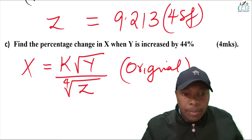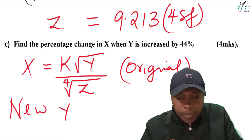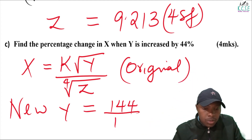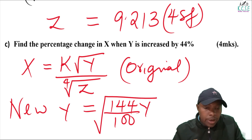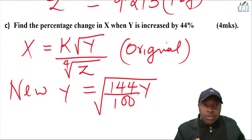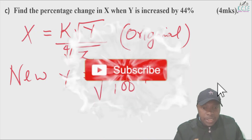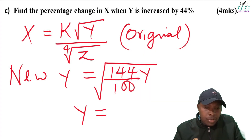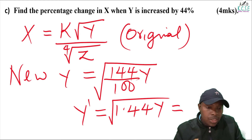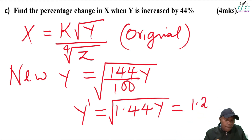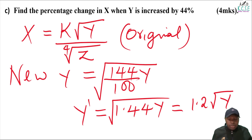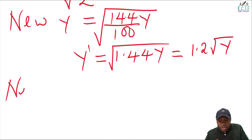When y is increased by 44%, new y will be 144 over 100 times y, which equals 1.44y. In the equation we need the square root of the new y, so the square root of 1.44y equals 1.2 times the square root of y. So that is the new y. In the equation we shall now have a new value of x.